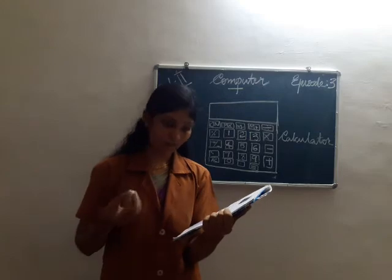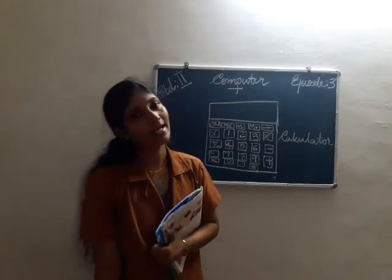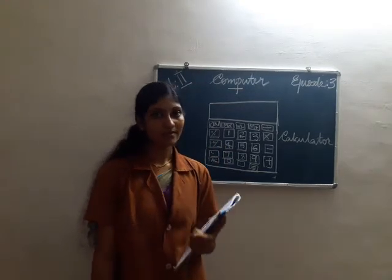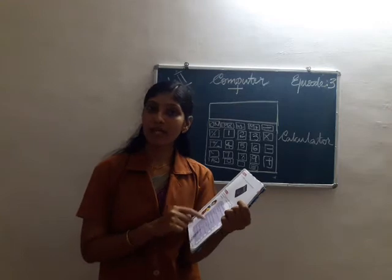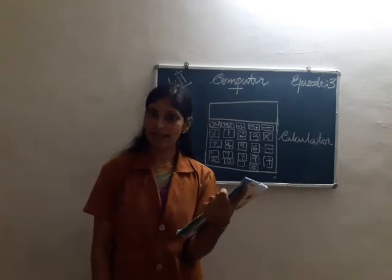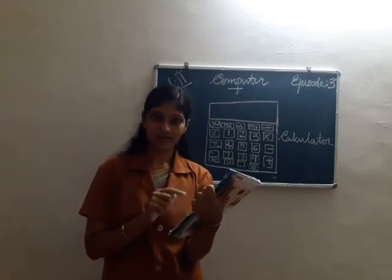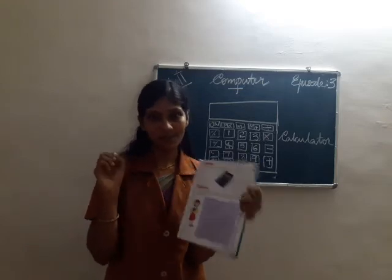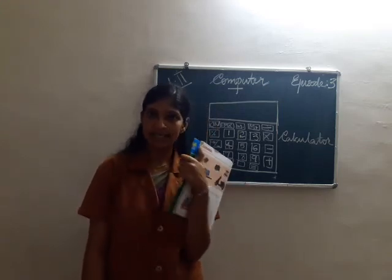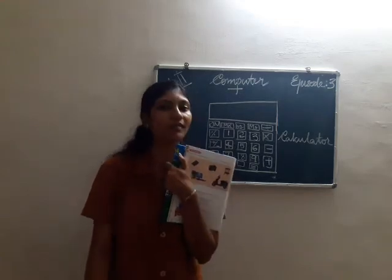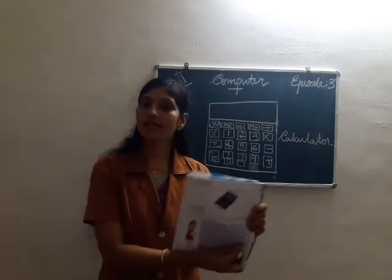Fourth question: you can make drawings using a calculator. We already discussed that a calculator is used for calculating numbers and operations. Can a calculator make drawings? No — so put a cross mark in this box. Fifth question: on a computer, you can type letters. Yes, we can type letters through the keyboard. So the question is correct — put a tick mark in this box.